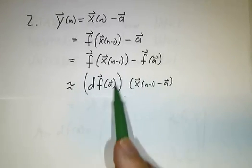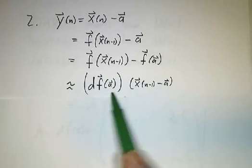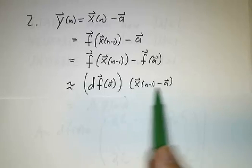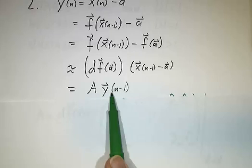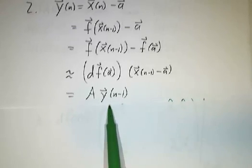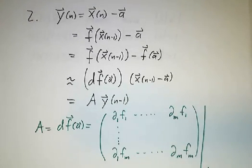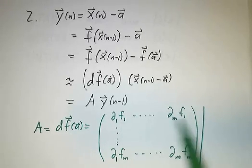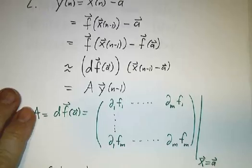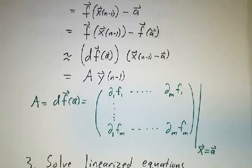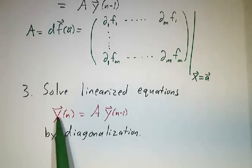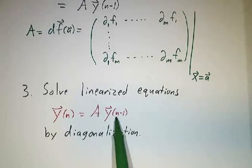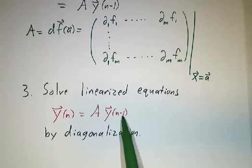And that's approximately the derivative of f — the Jacobian matrix — times x(n−1) − a. In other words, it's A times y(n−1), where A is the matrix of partial derivatives evaluated at x = a. So our linearized equations are that y today is A times y yesterday, and we solve them by diagonalization.